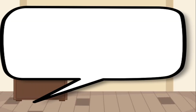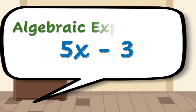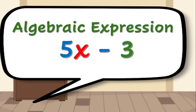But before we proceed to equations and inequalities, let's have some review of our previous discussions. What do you call this one? Yes, this is an example of an algebraic expression. In this expression, which one is the variable? Very good! The variable is x. How about the constant? Alright, the constant is 3. And the digit 5 is what we call? Yes, it is the numerical coefficient of the variable x.